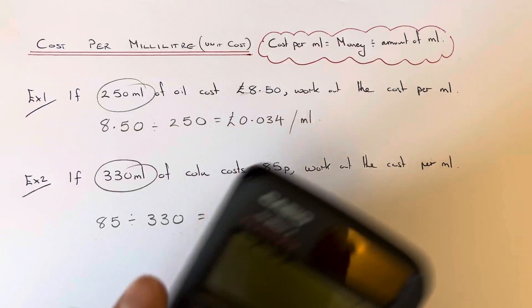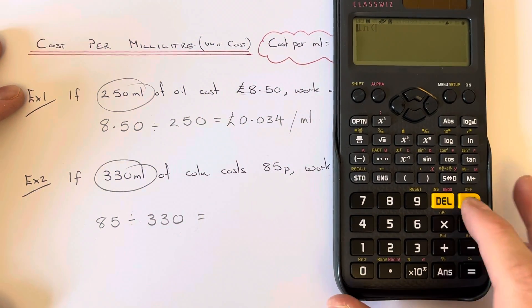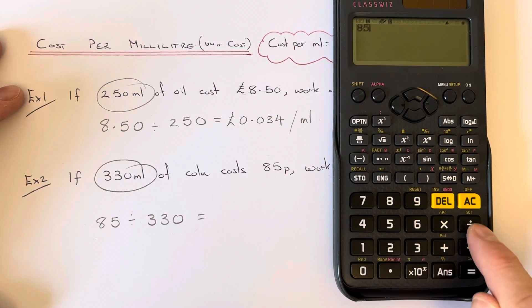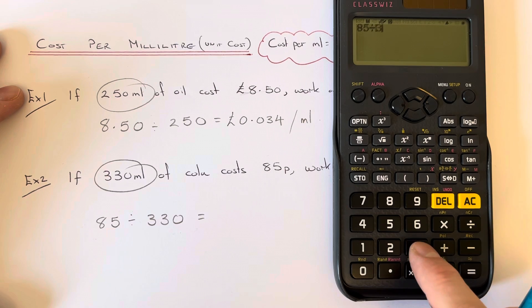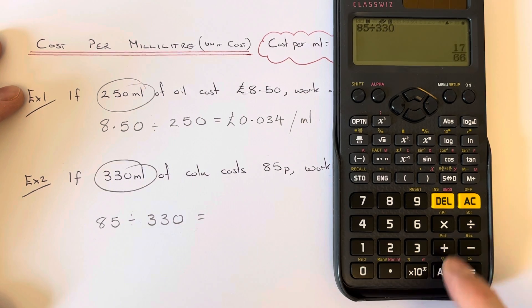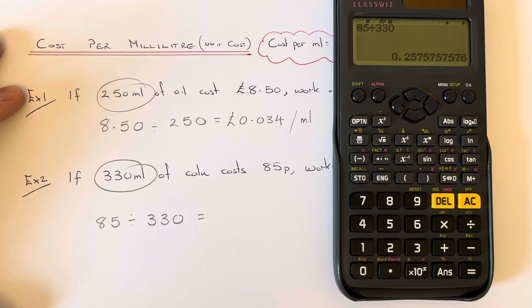Again, if we put this on our calculator, 85 divided by 330. This time we have a recurring decimal.